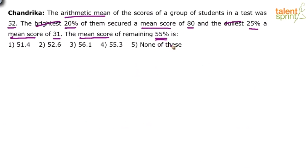20 percent plus 25 percent is 45 percent. The average of the remaining 55 percent of students is the question here. How do you do this? We know that the average for the entire class is 52. So this 52 is equal to what? Average of 52 here is nothing but the sum of the scores.